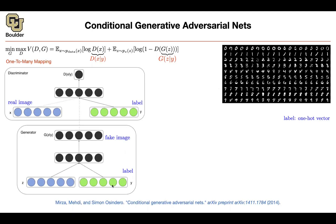That's your additional information. Your generator not only takes as input some noise — it's going to take as input your label. I want to generate zeros, or I want to generate fours. You push them through your neural network and in the end you're going to get a fake image. You take that fake image, in addition to the real image and the label, and you push them through — basically concatenating this information, multiplying by weights, to give the probability of the image being real or fake. Then you can train it with the same objective as before.